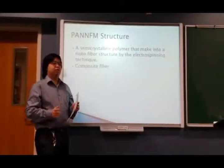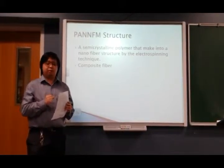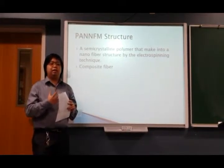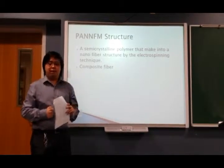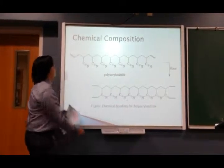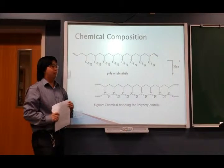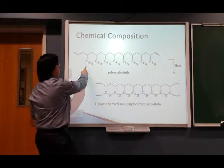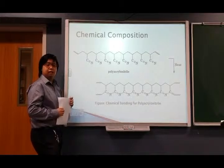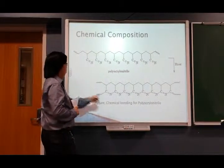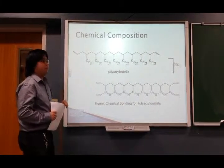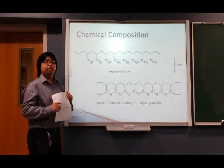It is also a composite fiber due to its mechanical structure and chemical properties. The mechanical properties will enhance other properties, such as enzyme immobilization. Looking at the chemical structure of PAN, there is a triple bond of carbon and nitrogen. When heated through the electrospinning technique, one of the bonds will connect to the other carbon and form the fiber form.